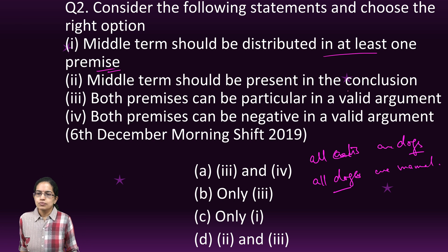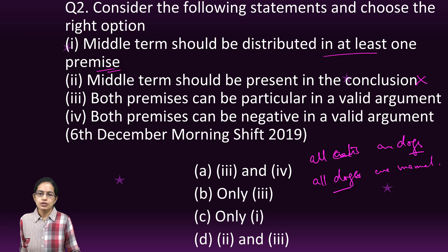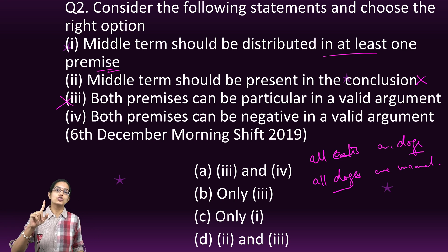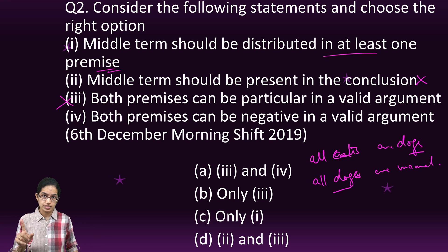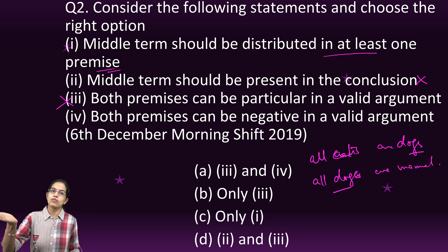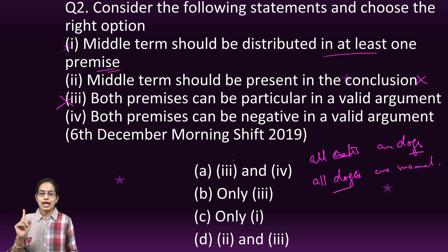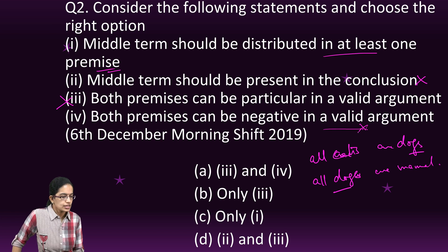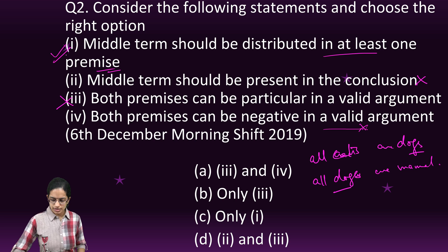The claim that the middle term should be present in the conclusion is incorrect — the middle term is not present in the conclusion. Both premises can be particular in a valid argument is also incorrect; either of the premises has to be universal — universal affirmative or universal negative. Both premises can be negative in a valid argument is again incorrect. So only the first option is correct here.